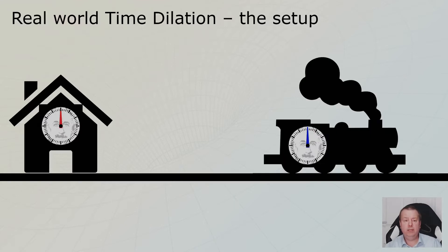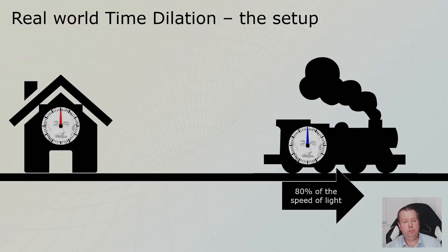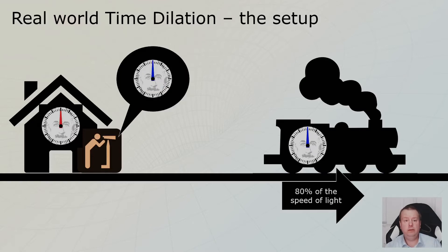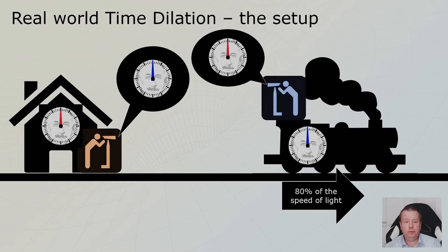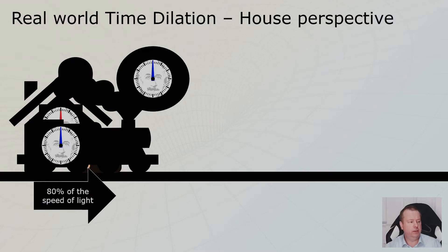I introduced a house with a clock and we are in the house. There is a train with its own clock and it's moving at 80% of the speed of light. There is an observer in the house where we are as viewers as well and he is observing the clock on the train. And there will be an observer in the train who is watching at our clock in the house with his telescope.